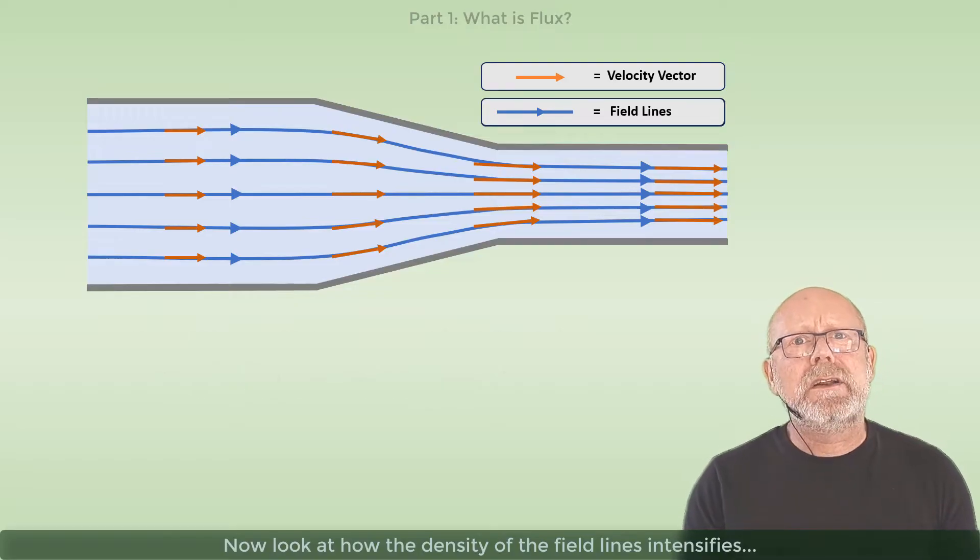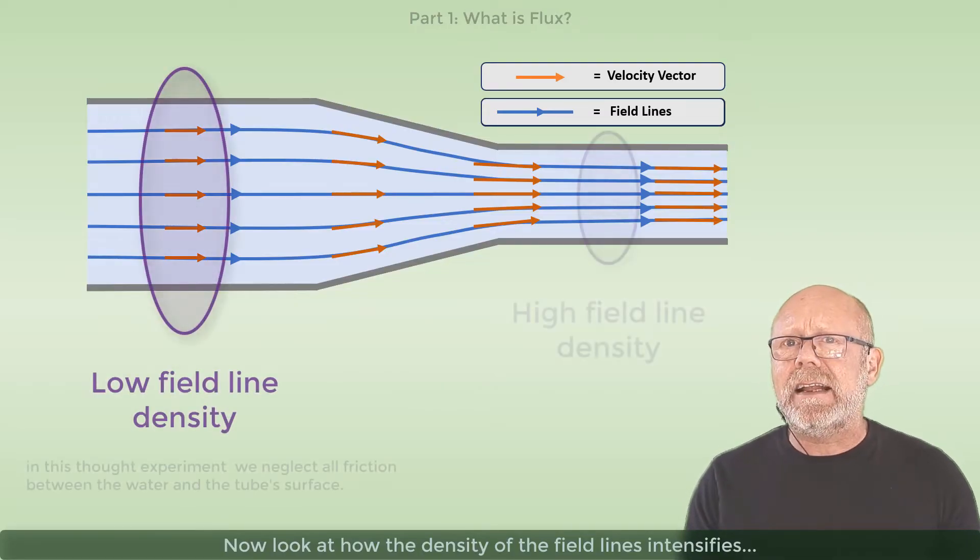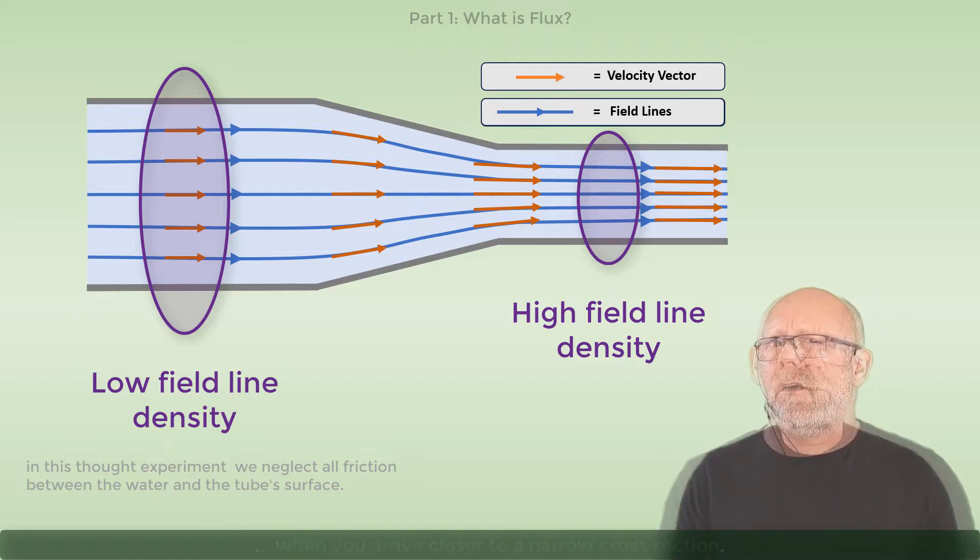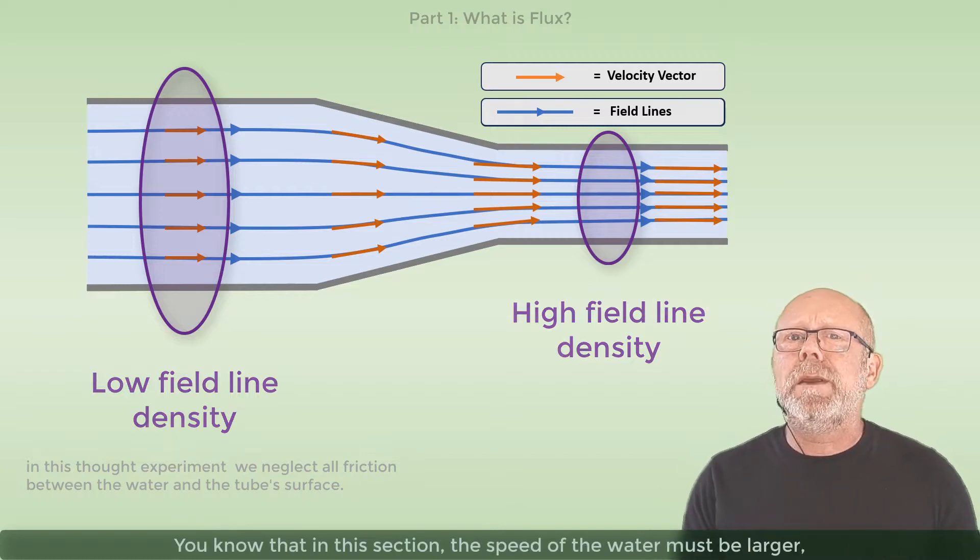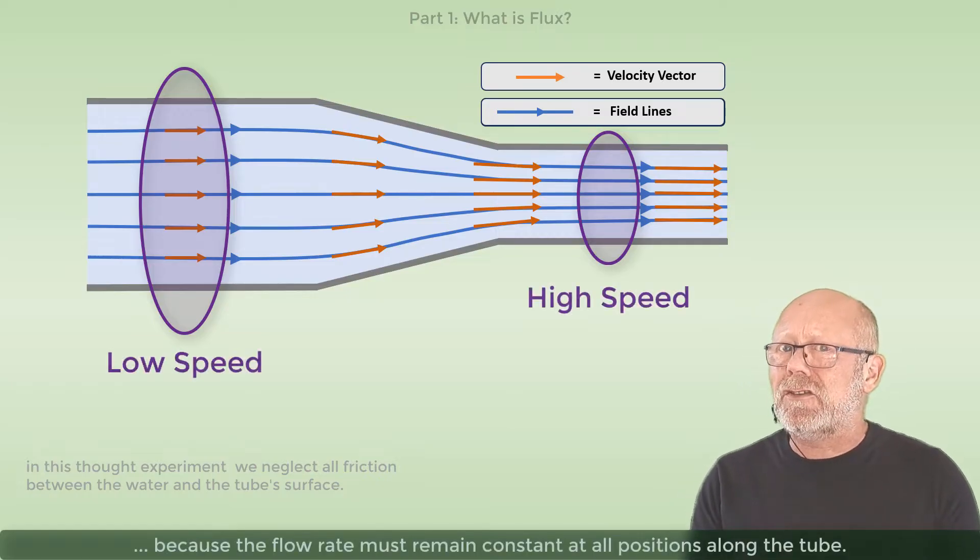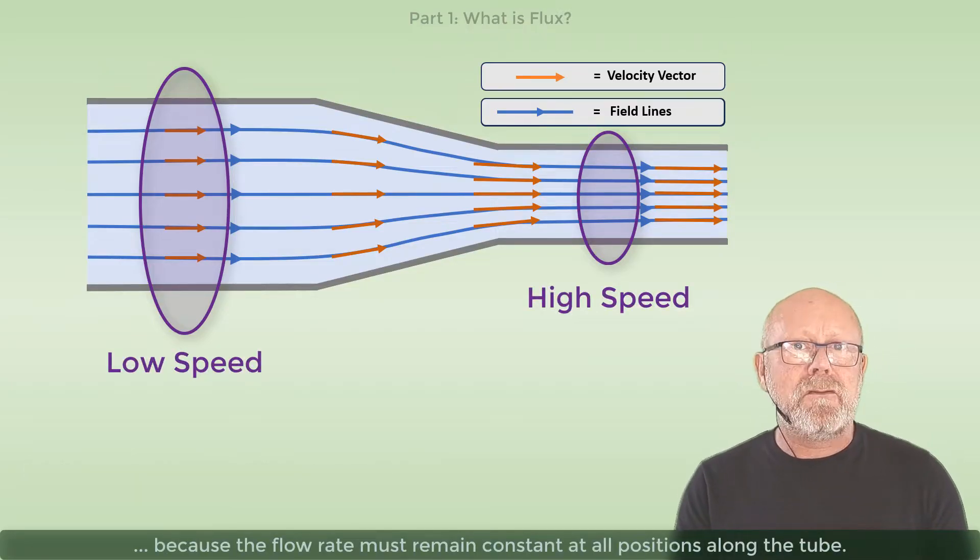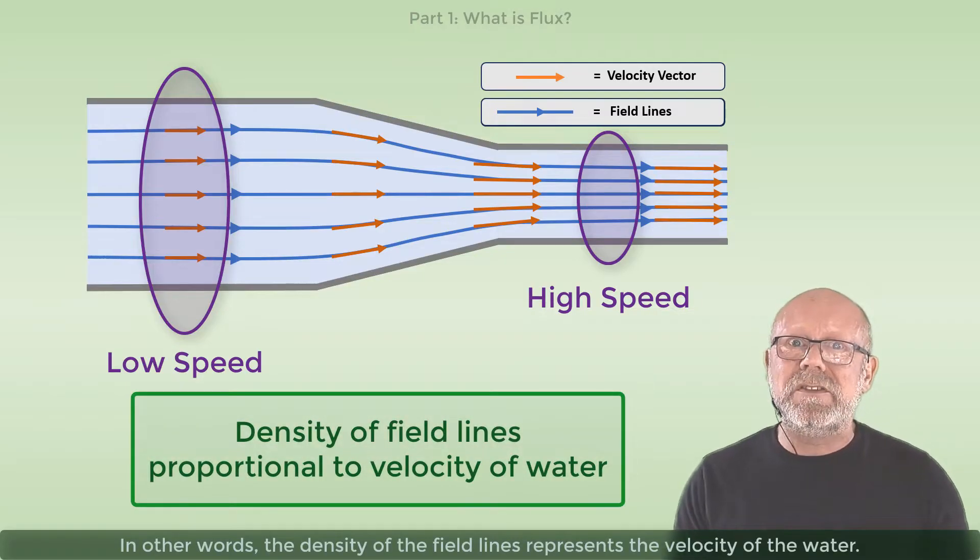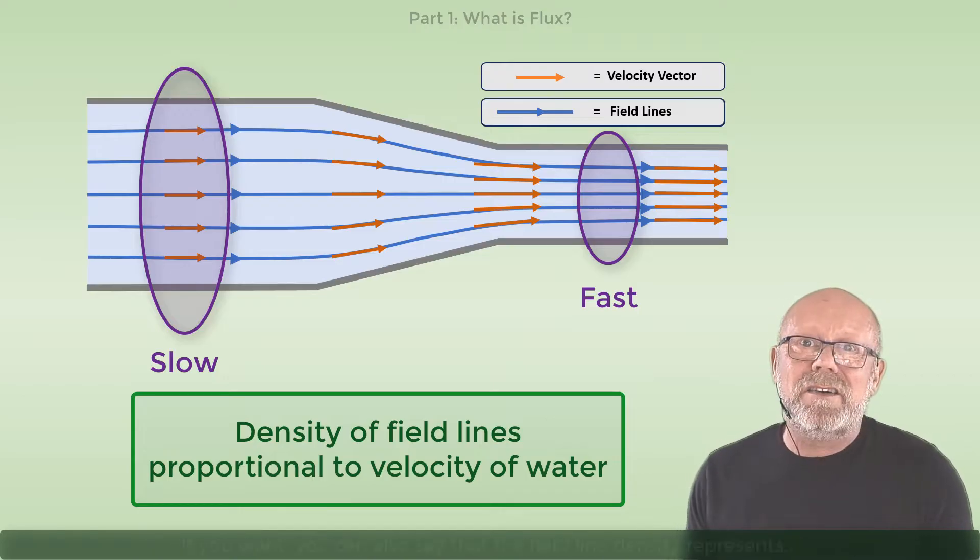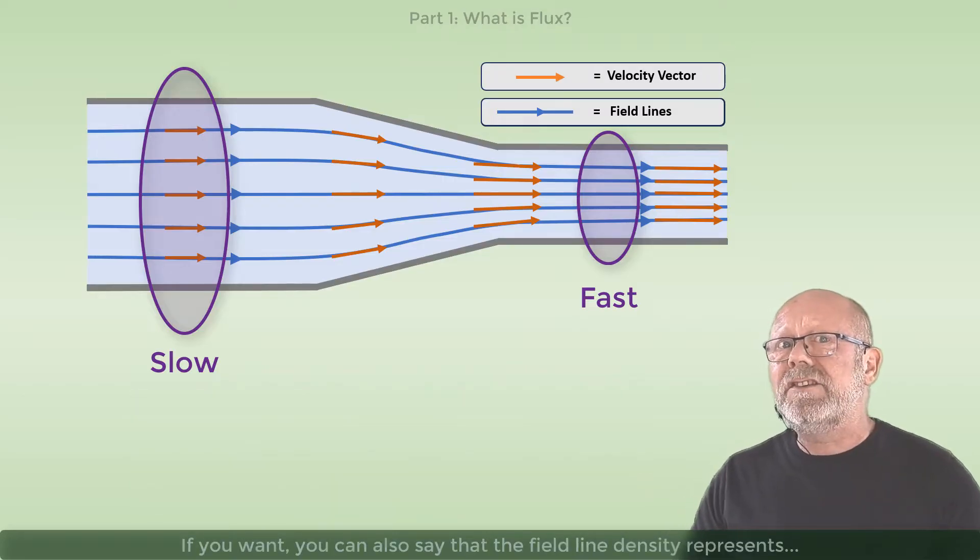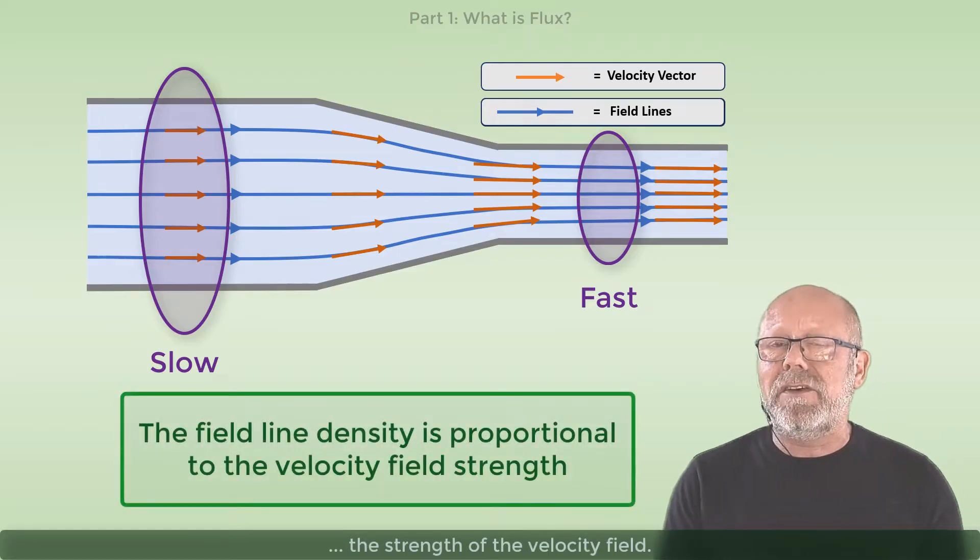So the flow lines can actually be seen like the field lines of a velocity field. Now look at how the density of the field lines intensifies when you arrive closer to a narrow cross-section. You know that in this section, the speed of the water must be higher, because the flow rate has to stay constant at all positions of the tube.